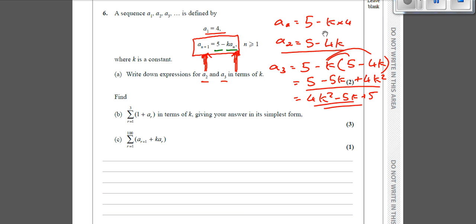Part b, for three marks, we've got to work out r equals 1 up to 3, the sum of 1 plus a_r. So a_r, if we're going from 1 to 3, it means a1, a2, and a3. What we've got to do is work out (1 + a1) + (1 + a2) + (1 + a3). That's what that means.